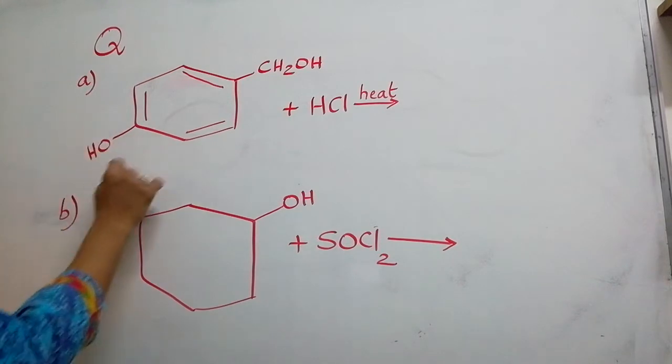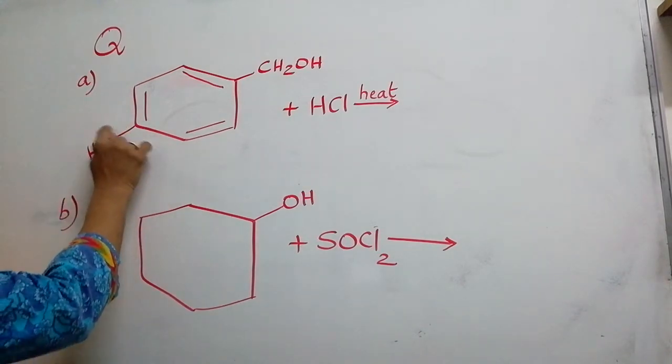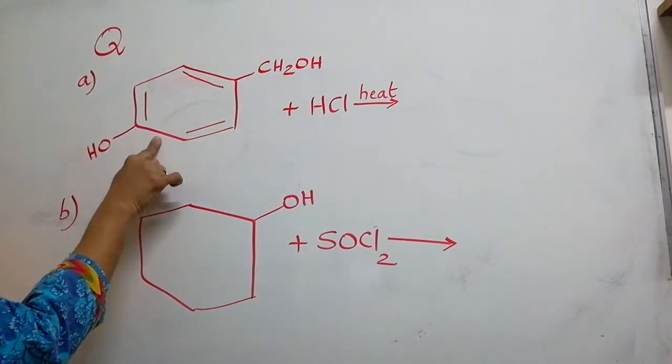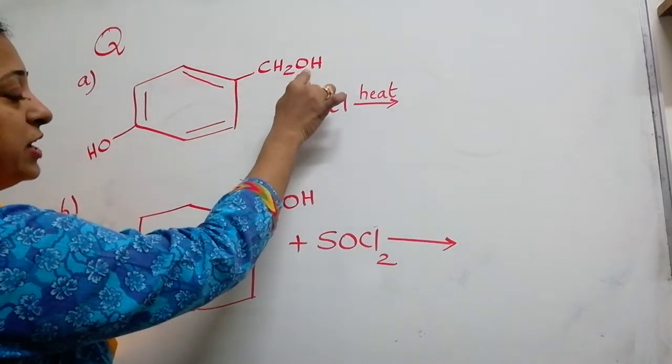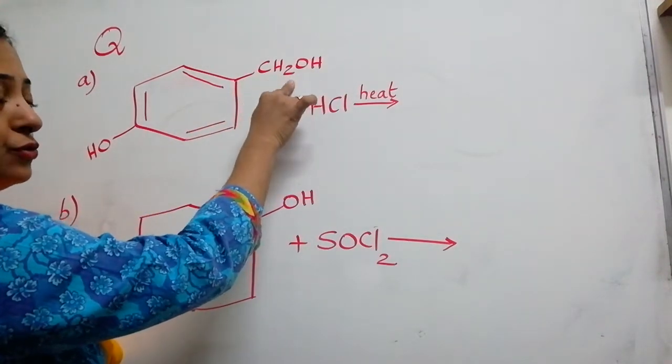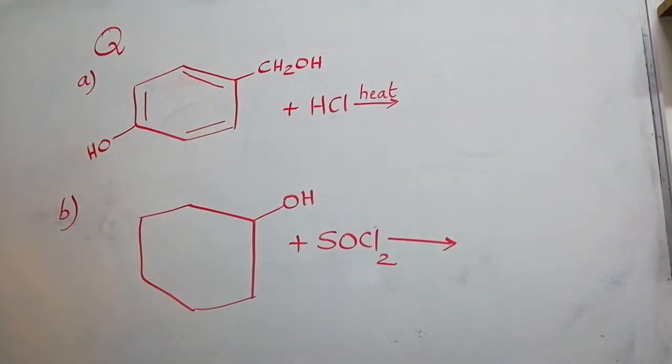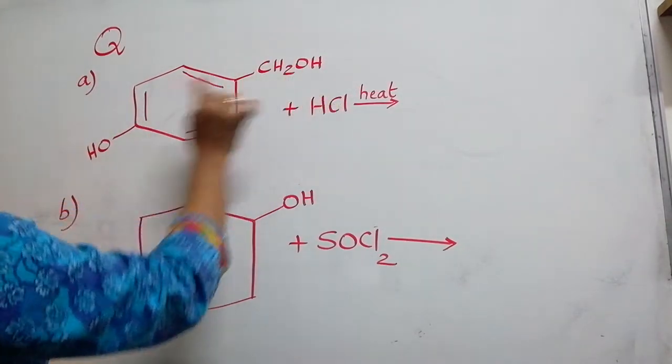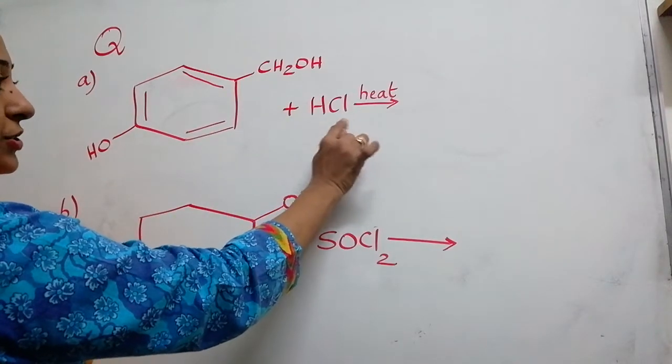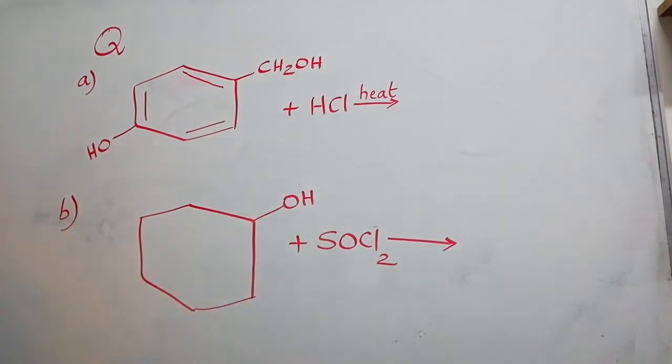Here you will notice there are two OH groups. One OH attached directly to the benzene ring, and another OH attached to the CH2 group and not directly attached to the benzene ring. So first identify which OH can be replaced with this halogen. The halogen here is Cl. It is just a replacement of OH minus by Cl minus. This is what you need to look for in this reaction.